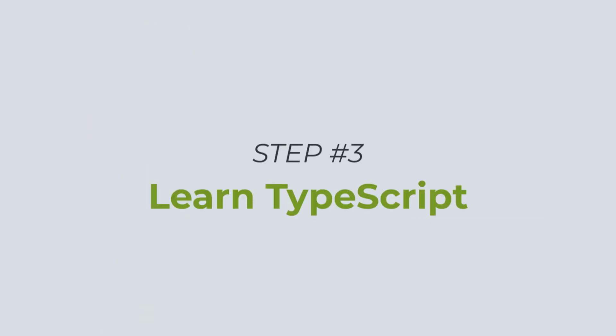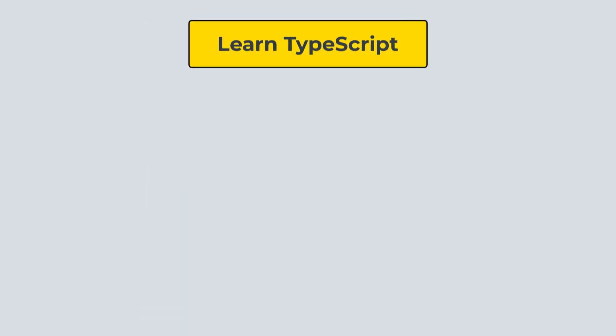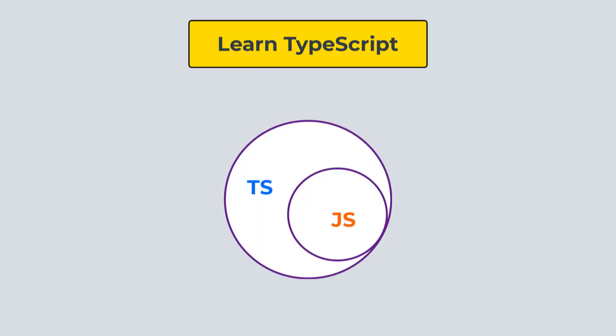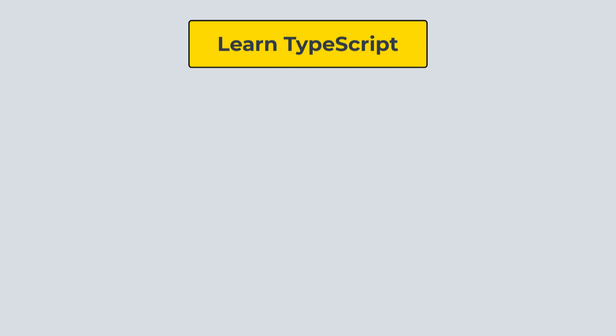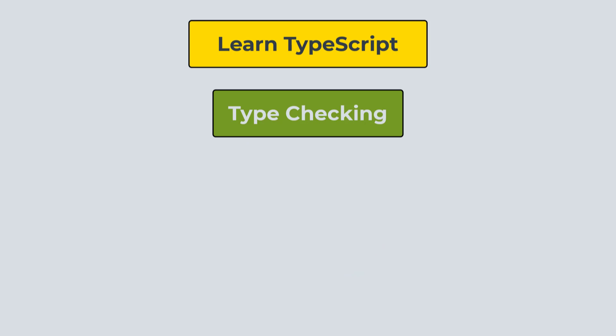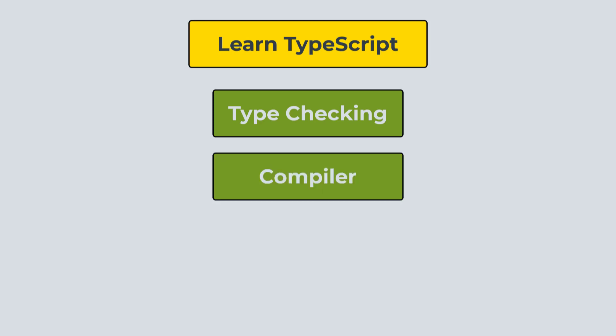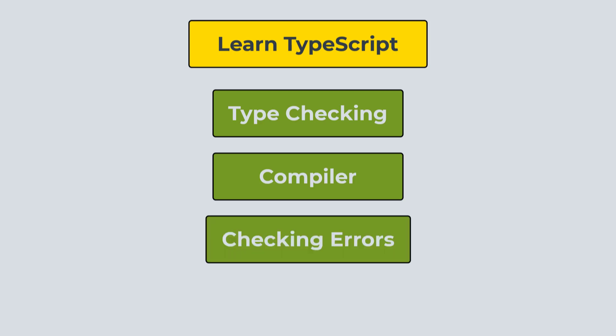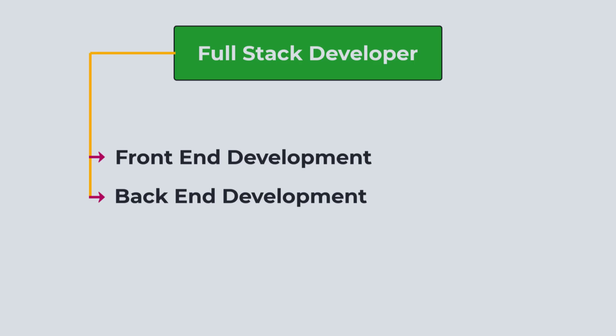Moving forward, you need to learn TypeScript — a programming language that enhances JavaScript by bringing new features and making it a statically typed language that is easier to write and debug. As the name suggests, TypeScript introduces a type system into JavaScript and is a superset of it. TypeScript code ultimately needs to compile to JavaScript in order to run in the browser, and it is primarily used to catch errors early during development.